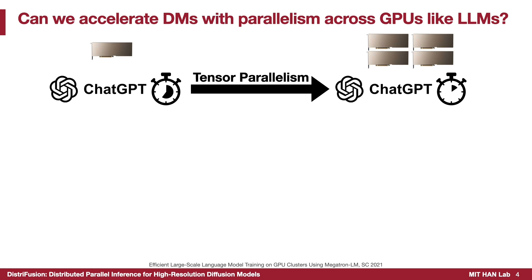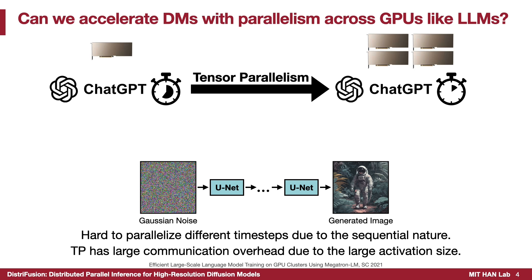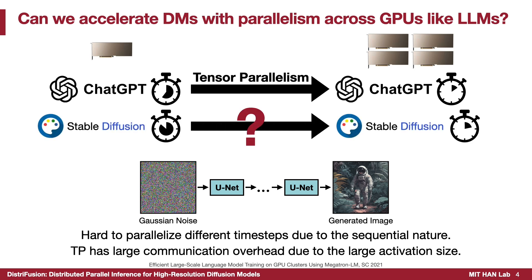However, for diffusion models, when generating a single image, typically only one GPU is involved. It is hard to parallelize different time steps due to the sequential denoising process. Techniques like tensor parallelism are less suitable due to the large activation sizes, as communication costs outweigh savings from distributed computation. So, how do we parallelize diffusion models?